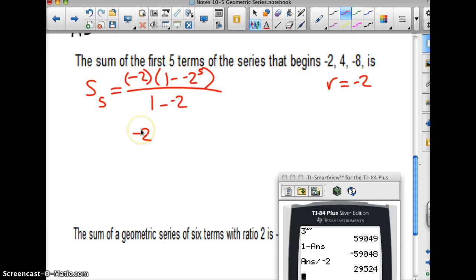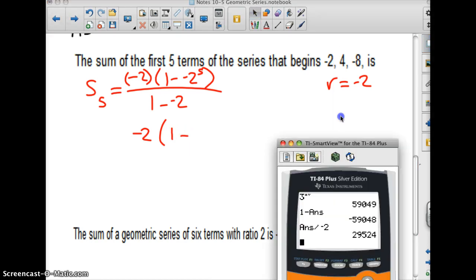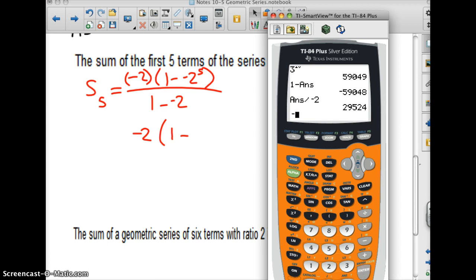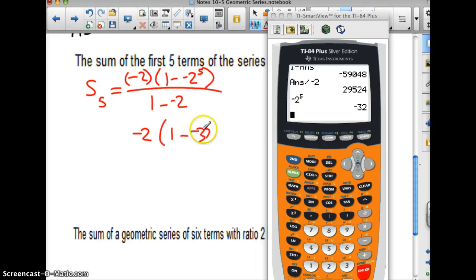So that's going to be negative 2. And this is going to be 1 minus, I need to do negative 2 to the 5th. Negative 2 to the 5th is going to be negative 2 raised to the 5th power is negative 32. So it's going to be 1 minus negative 32. All over 1 minus negative 2, which is plus positive 2. It's all over 3.